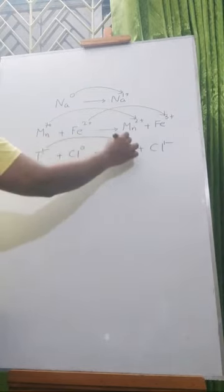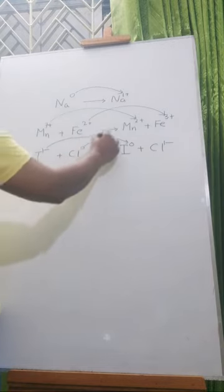Iodine charge: minus 1 to 0. Minus 1 to 0 means it's an increase. Chlorine charge: 0 to minus 1. That's a reduction.